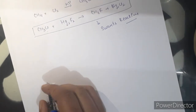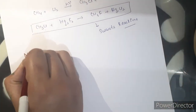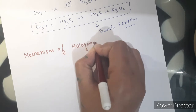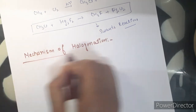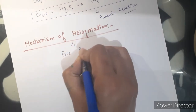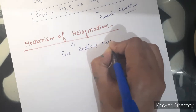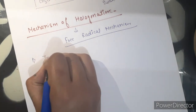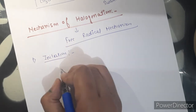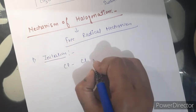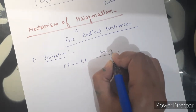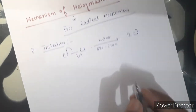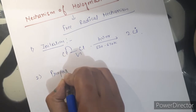This substitution reaction is followed by a free radical mechanism. The mechanism of halogenation involves three steps: initiation, propagation, and termination. In the initiation step, when a halogen molecule is exposed to sunlight or high temperature, it undergoes homolytic fission and gives formation of free radicals.